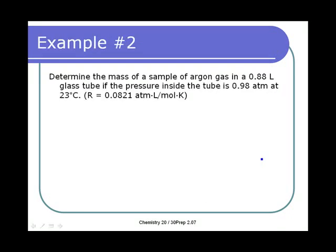Here we'll determine the mass of a sample of argon gas in a 0.88 liter glass tube if the pressure inside is 0.98 atmospheres. We use the ideal gas formula when given only one set of conditions — not two volumes, two pressures, and two temperatures. With one set of conditions, we use the ideal gas law.